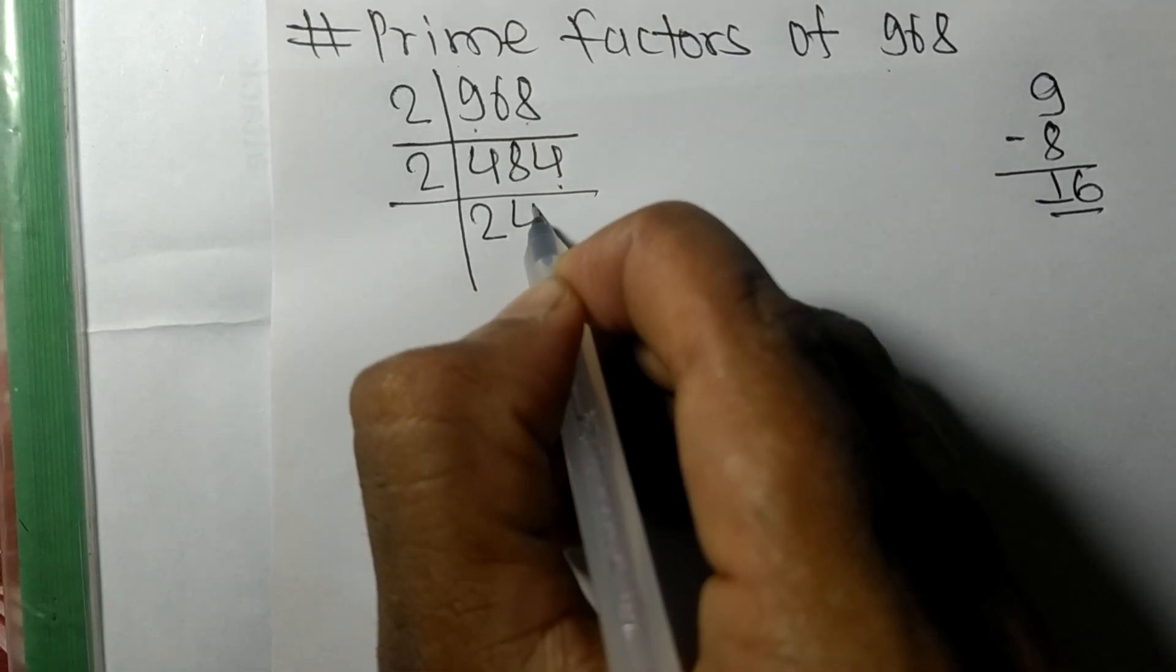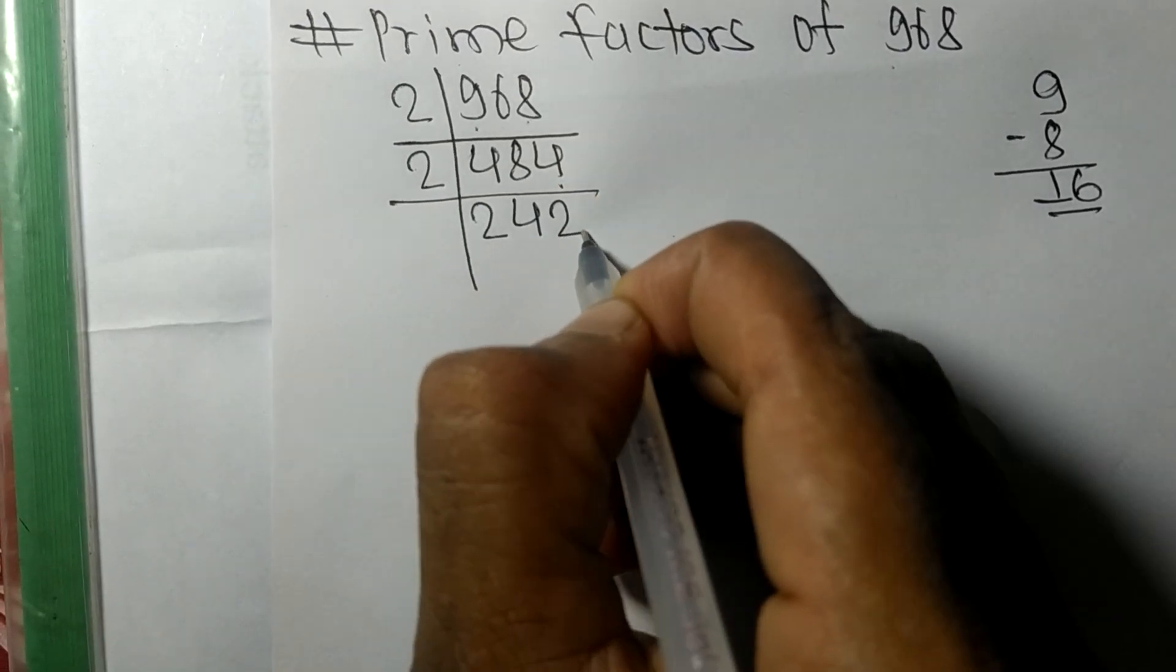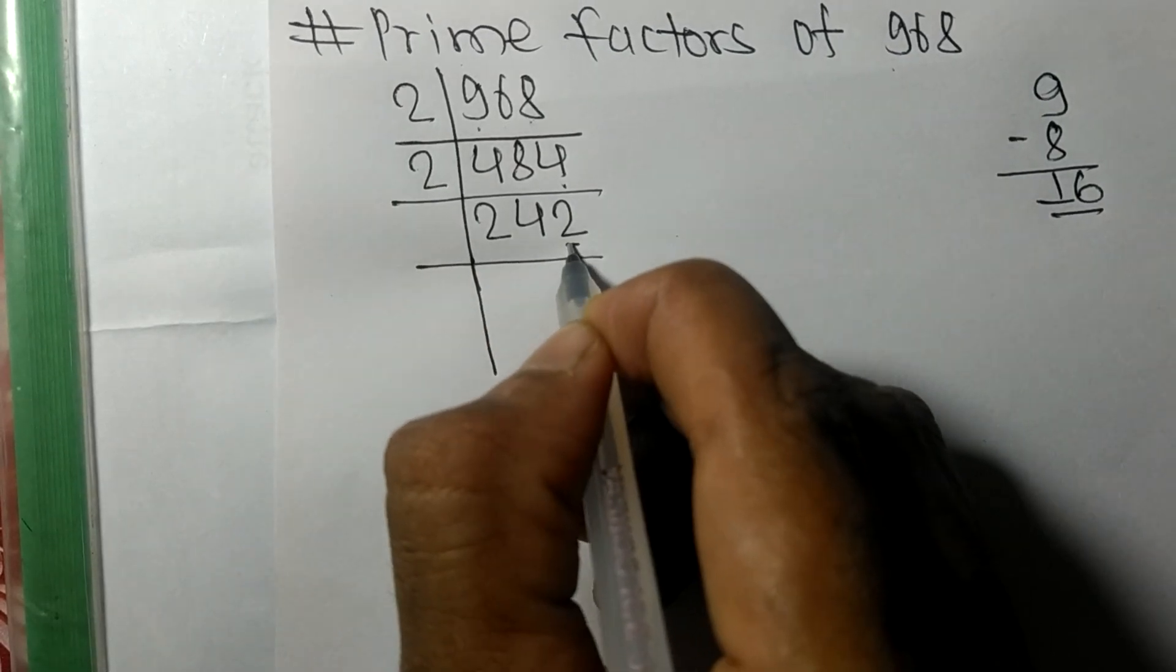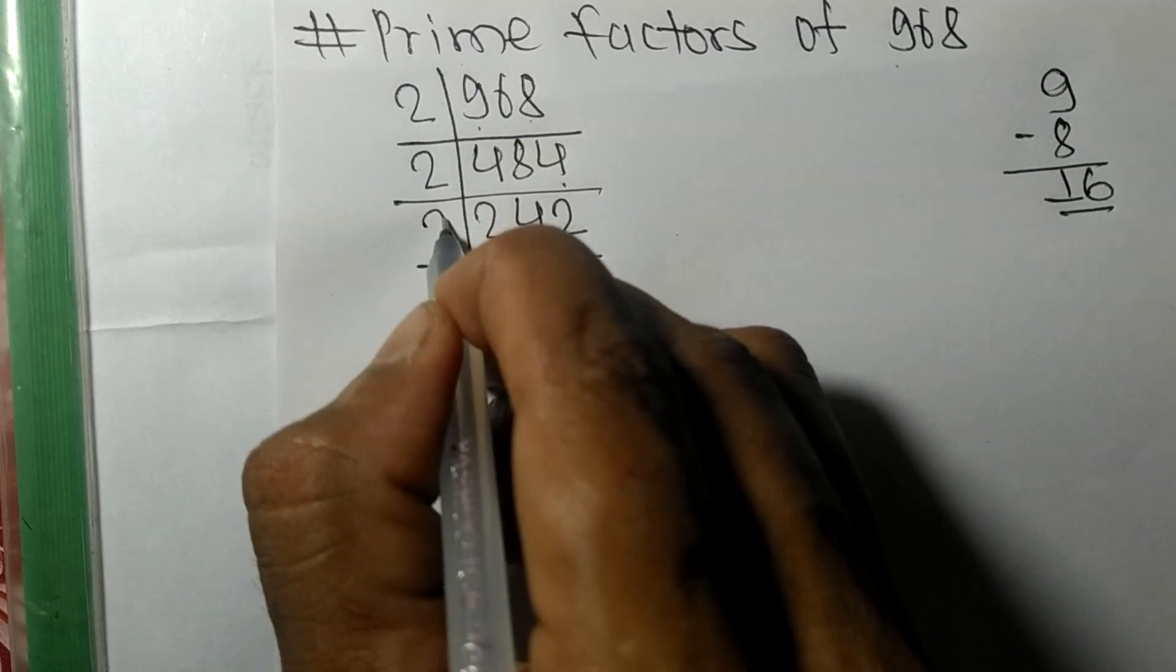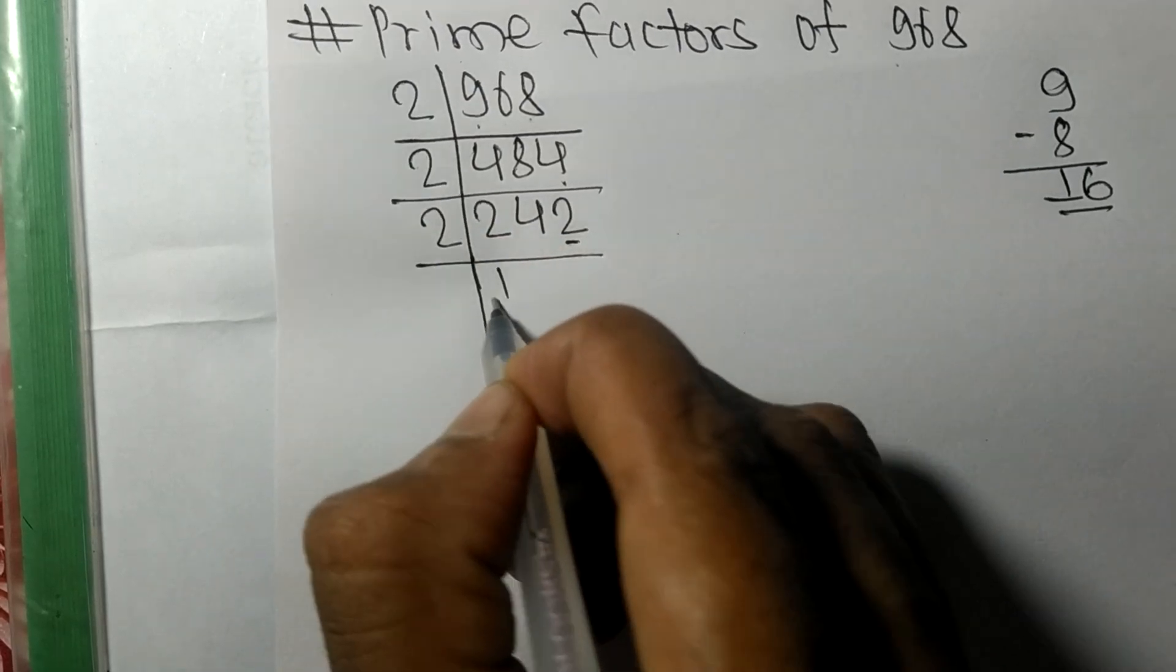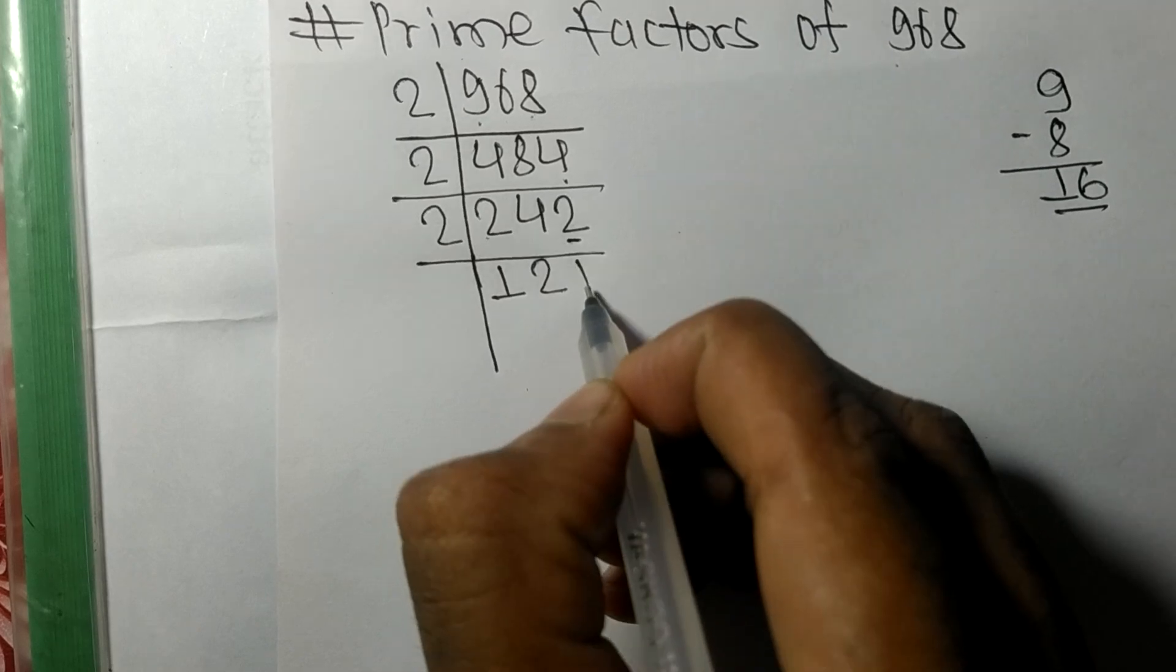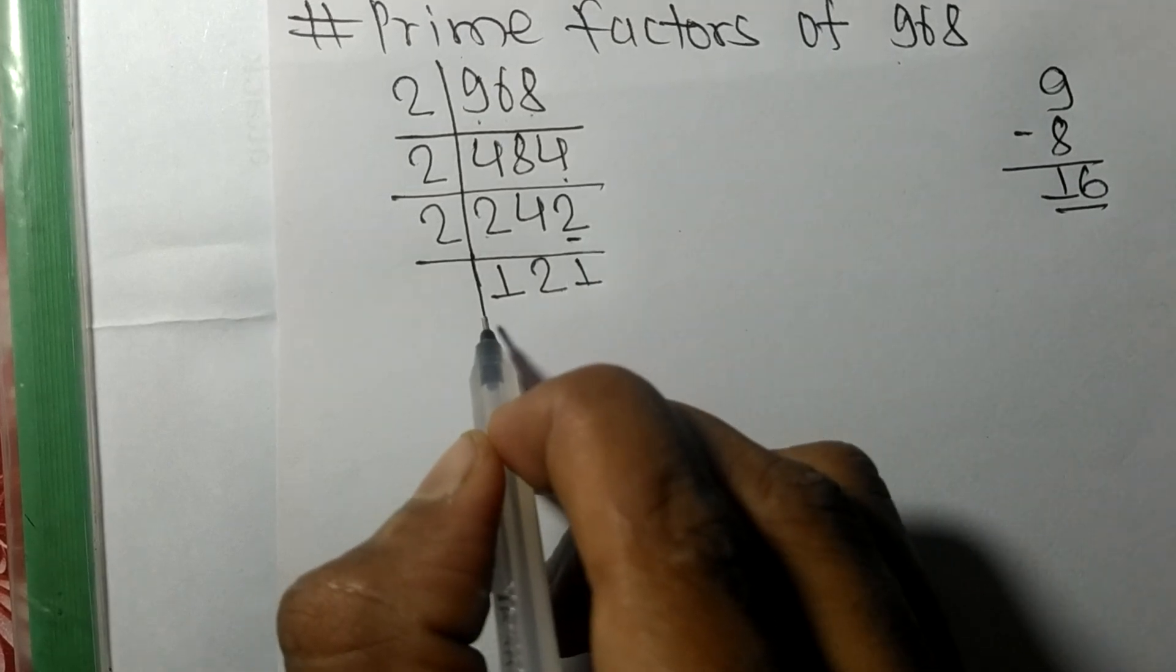Even number 2 at last, so it is divisible by 2. 2 times 1 mean 2, 2 times 2 mean 4, 2 times 1 mean 2. So now we got 121 which is exactly divisible by 11.